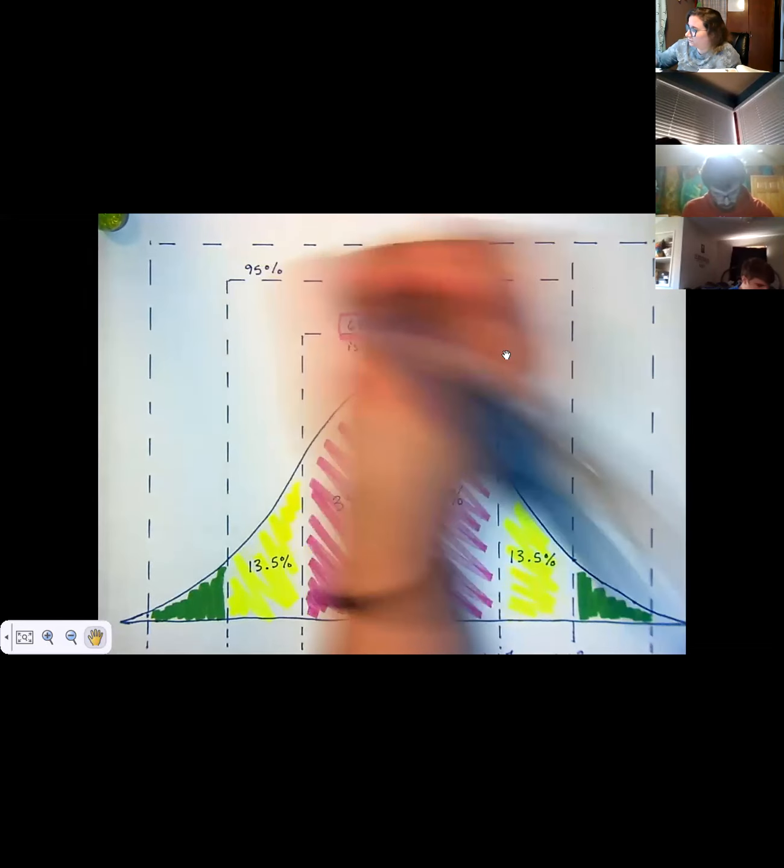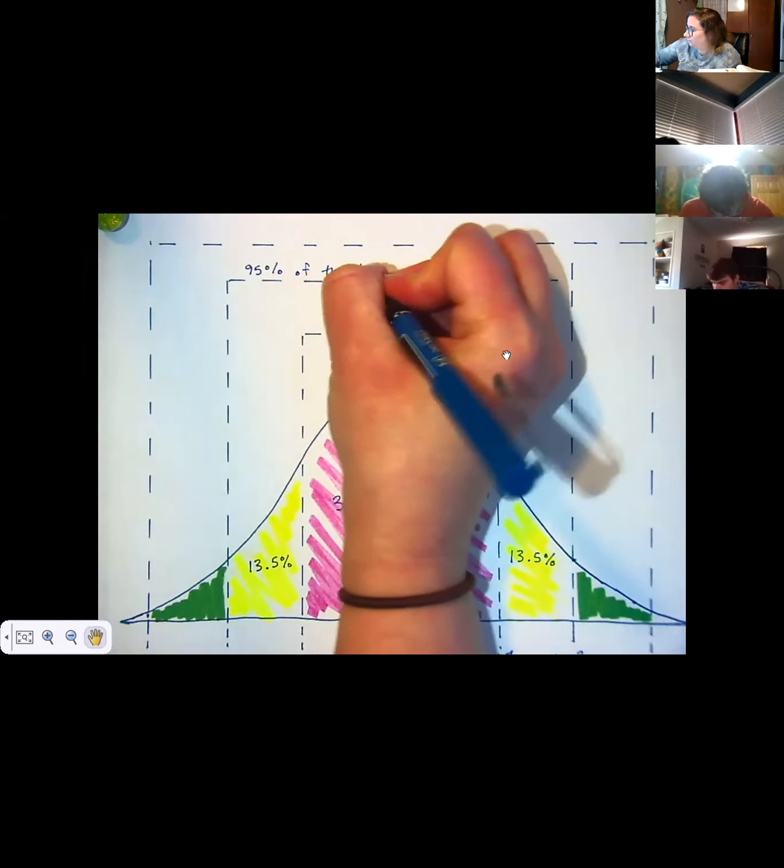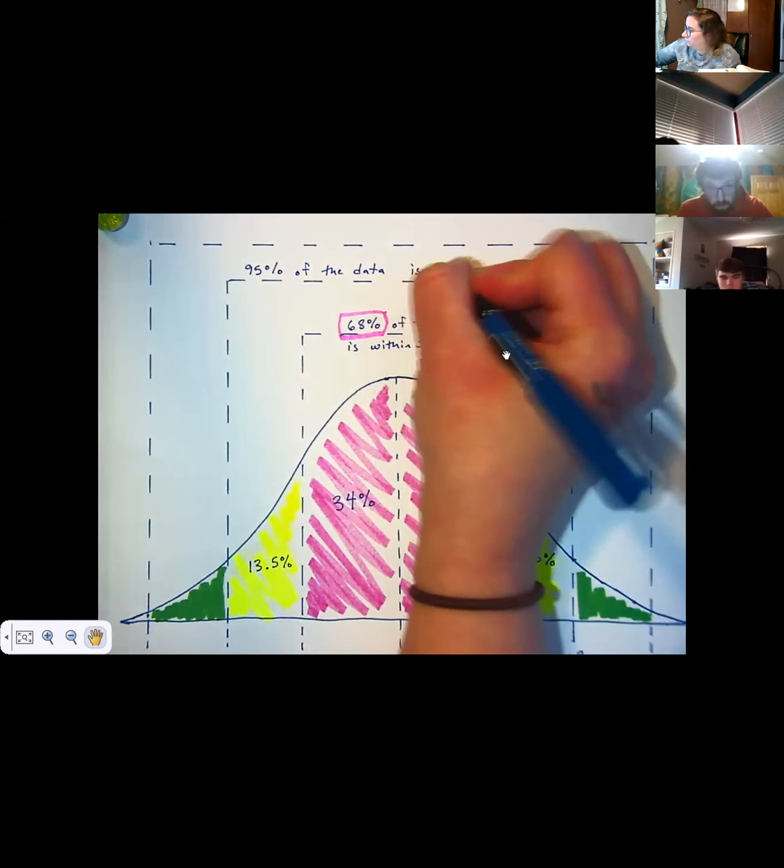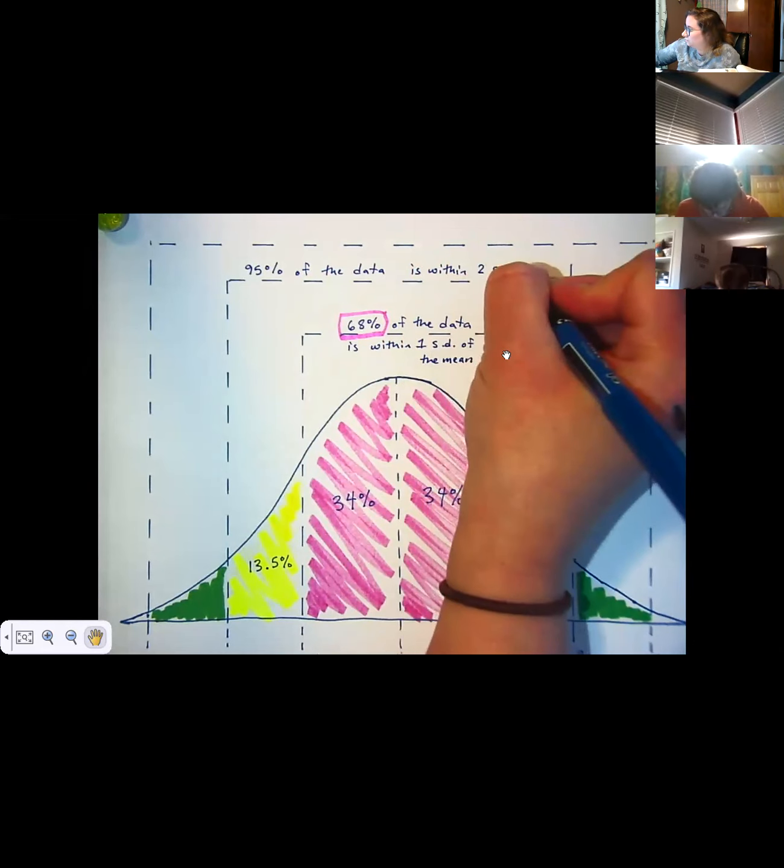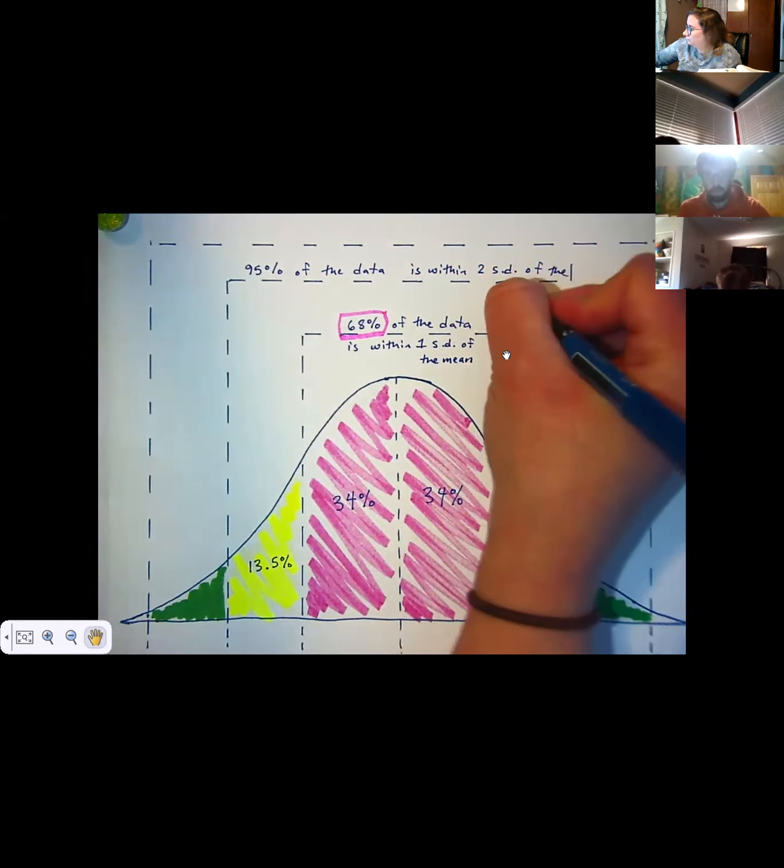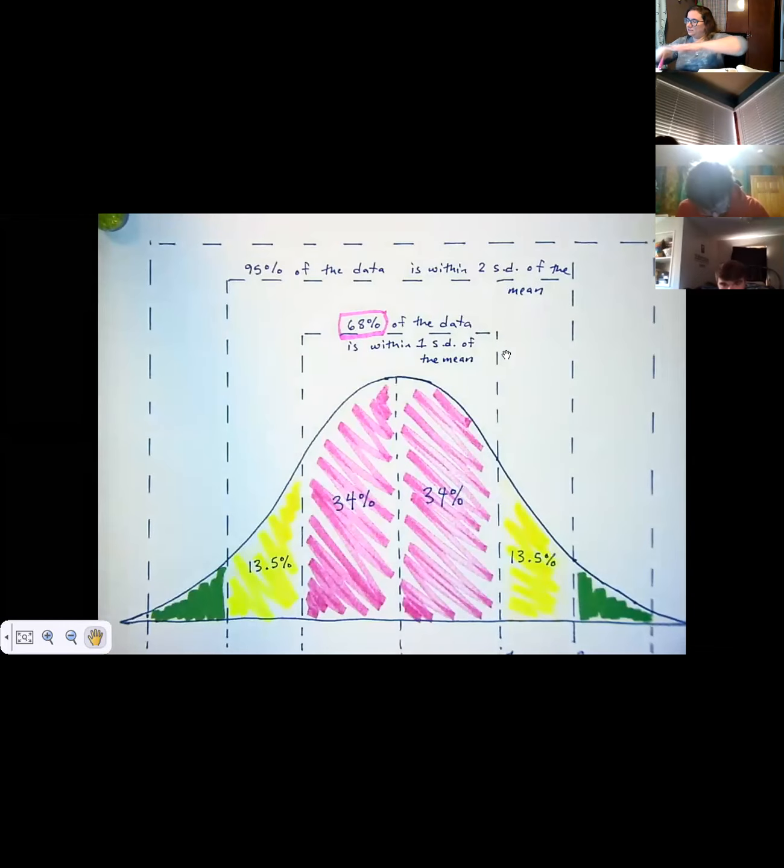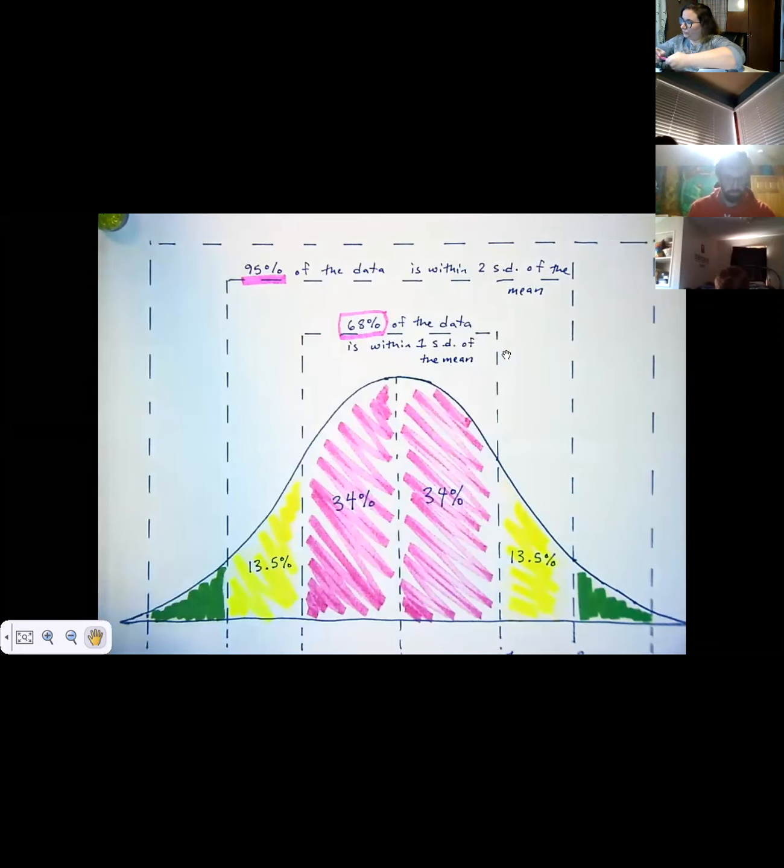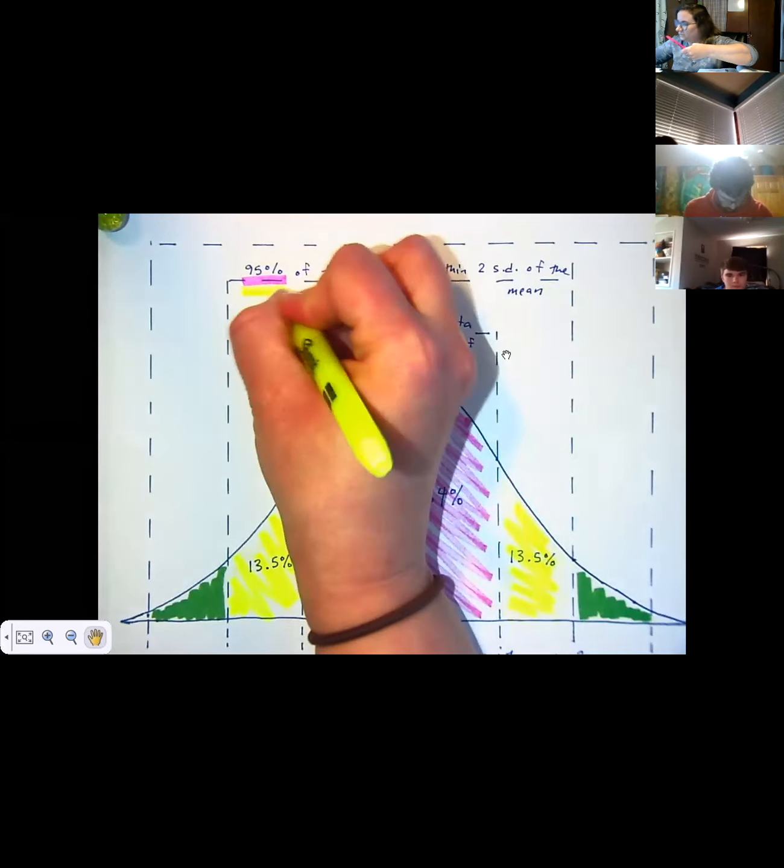that turns out to be 95%. So I'm going to write up here, 95% of the data is within two standard deviations of the mean. And by 95%, I'm going to put yellow and pink because it's not just the yellow, it's yellow and pink together.